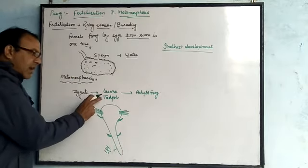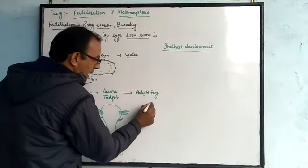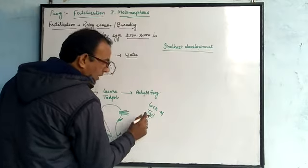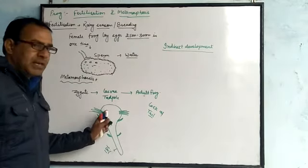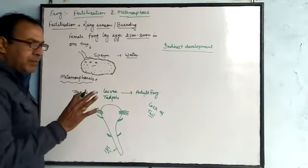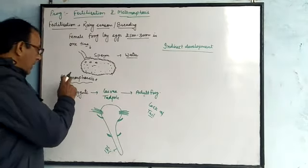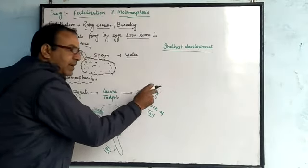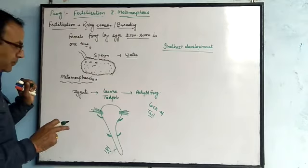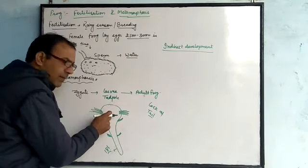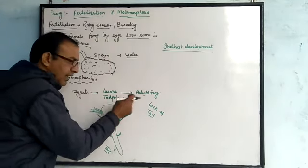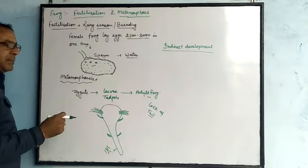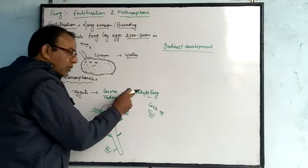As these larvae change into adult frog, there is a lack of tail — the tail reduces in size. The larvae change into adult frog through this process. The larvae is actually larger in size than the adult frog because it contains a tail, but when it changes into adult frog the tail is absent, so they reduce in size.